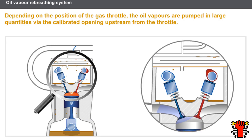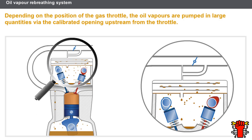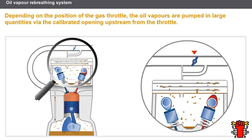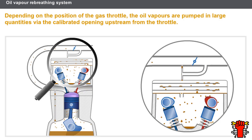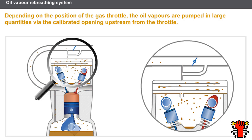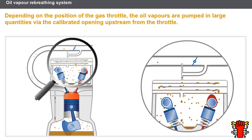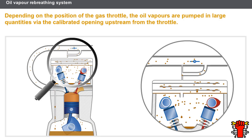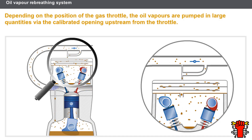Let's look at the operation of an oil vapour rebreathing system with a separator filter on the cylinder head cover. When the throttle is closed, the vapours are pumped in small quantities via the calibrated opening downstream from the throttle. When the throttle is open, the vapours are pumped in larger quantities via the calibrated opening upstream from the throttle.